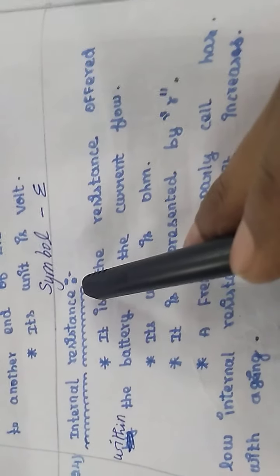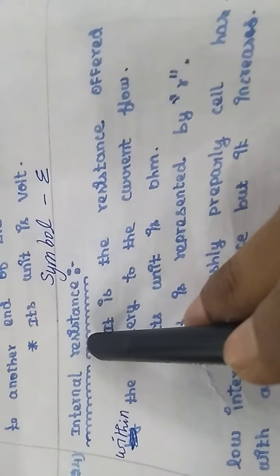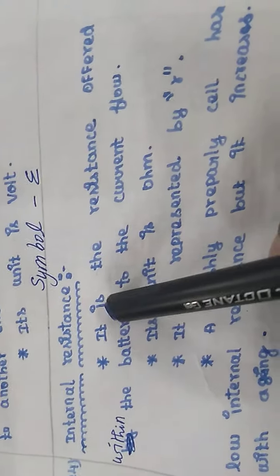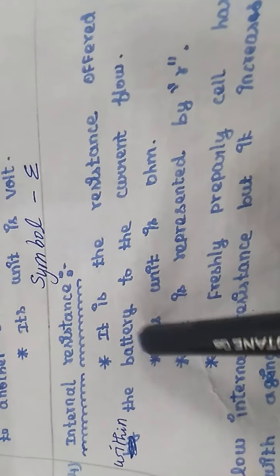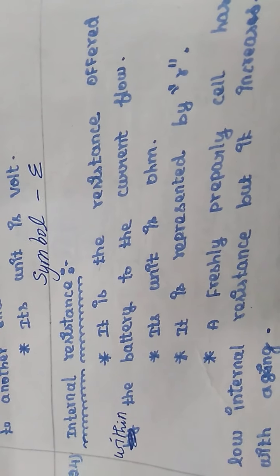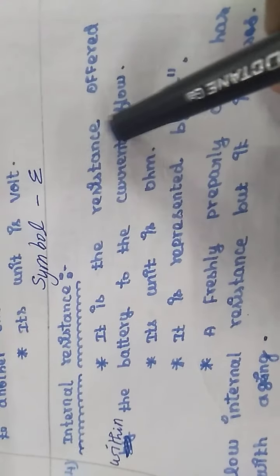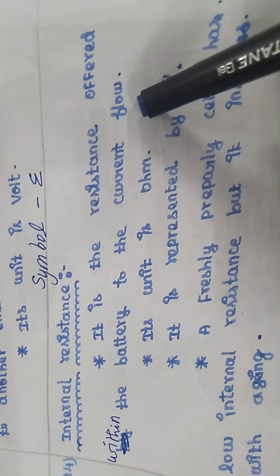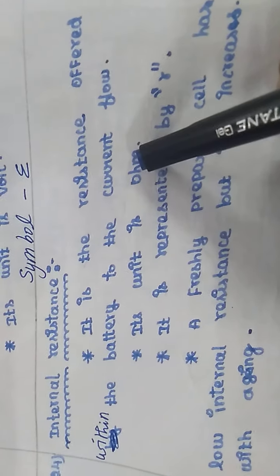Another important property is internal resistance, represented by the symbol small r. Internal resistance is the resistance offered within the battery to the current flow. Its unit is the ohm.